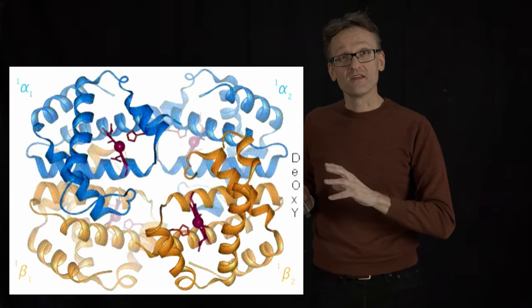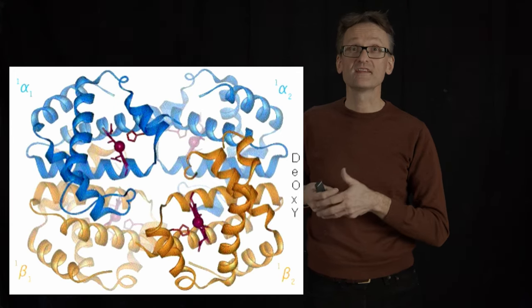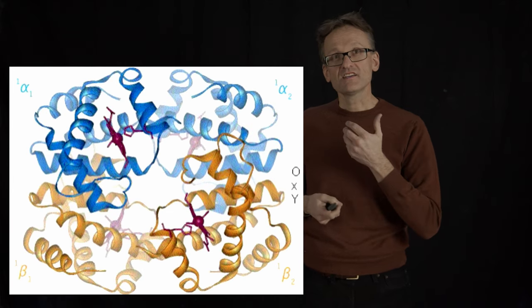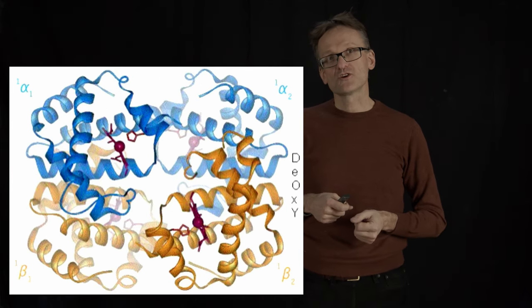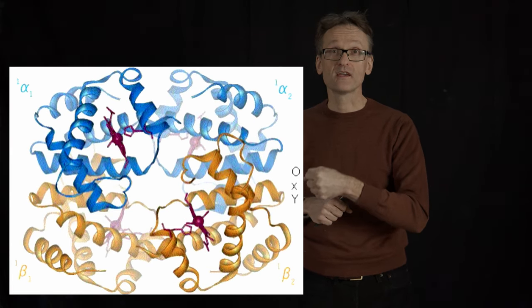Normally, hemoglobin without oxygen present exists in what we call the deoxygenated or tensed state. As one oxygen molecule starts to bind here, that will cause the entire molecule to shift over into a relaxed state.